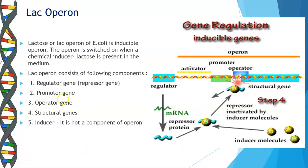Next, we have the promoter gene, which is located just adjacent to the operator region. The promoter gene marks the site at which the RNA polymerase will come and bind. When the operator gene is turned on, the enzyme moves over the operator gene and transcription of the structural genes will start. The promoter gene base sequence determines which strand of DNA acts as a template.